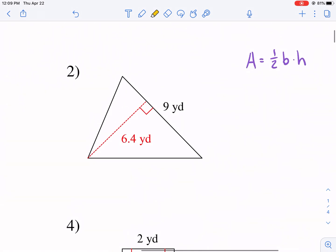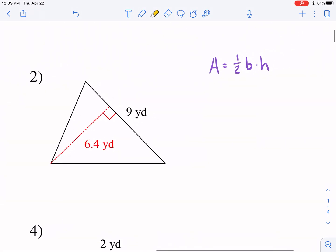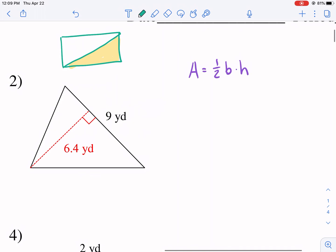Number two, our second shape. Second shape is a triangle. A triangle is half the area of a rectangle. So if we have a rectangle and we cut it in half, we would have a triangle and that's why the area formula for a triangle is half that of a rectangle.